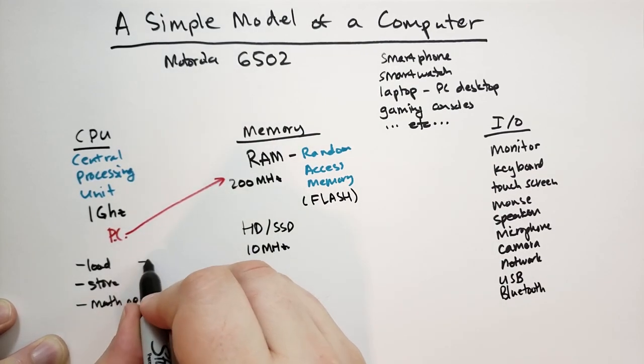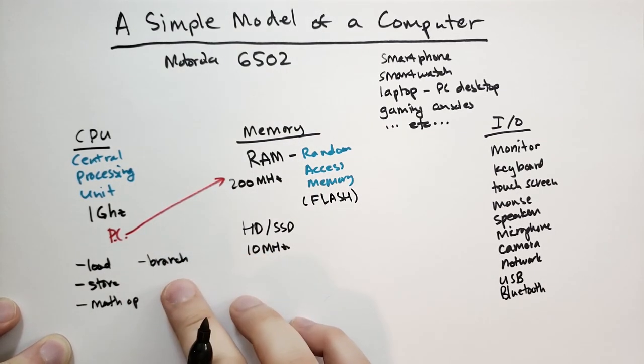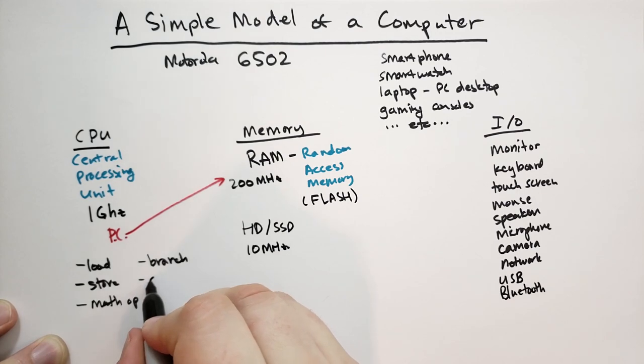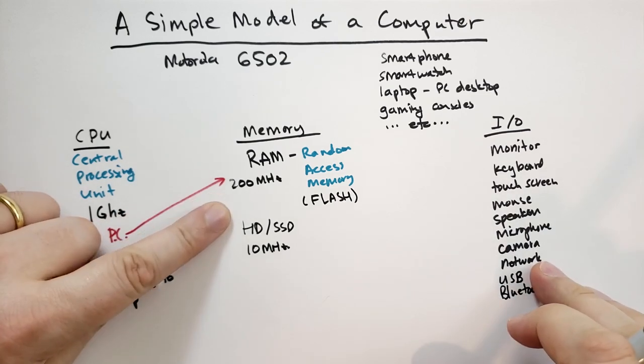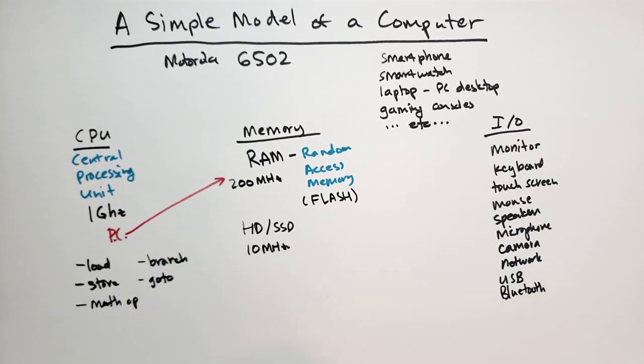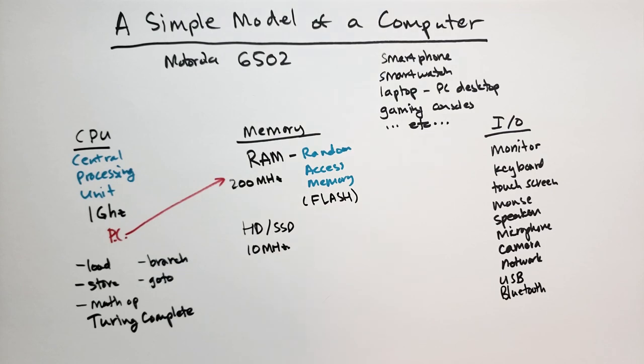There might also be some kind of branching operation that says, if these two values compare, then jump over there. And then you're going to have some basic go-to functionality so you can move the PC wherever you want. Typically the program counter just advances to the next instruction as it goes along. And so these things together, these operations,